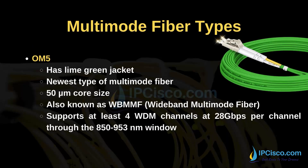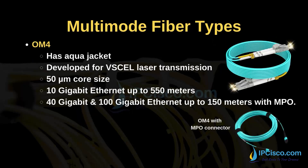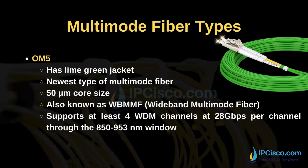Yes, this is the answer to our question at the beginning. OM5 is the latest multimode fiber technology today. The jacket color is changing again — OM5 has a lime green jacket. It has a 50 micrometer core size. OM5 is also known as WBMMF, wideband multimode fiber. It supports at least 4 WDM channels at 28 gigabits per second per channel through the 850 to 953 nanometer window.